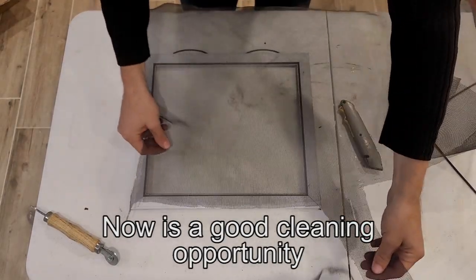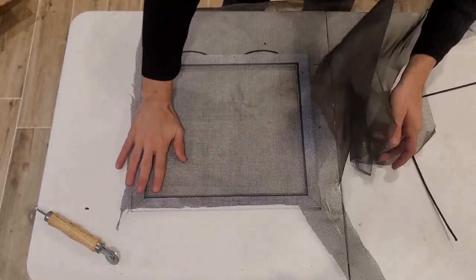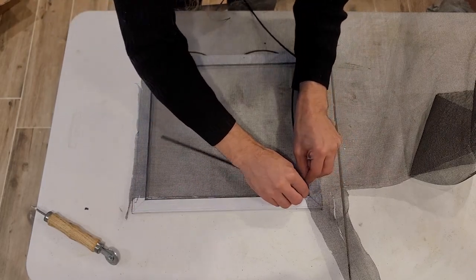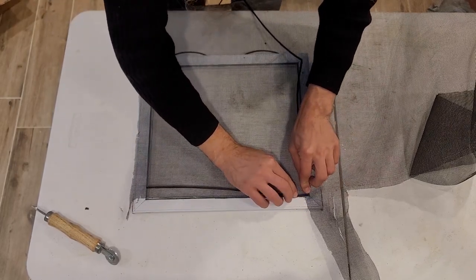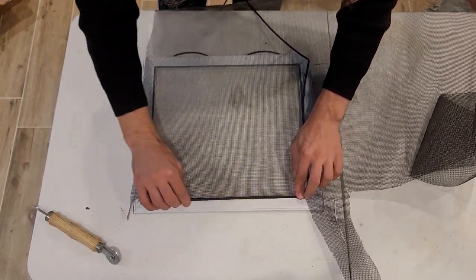From here, lay your replacement screen on top of the frame, and you will want to leave ample spacing on all sides, because when you apply the spline and press it back in, it's actually going to suck some of the screen into itself.